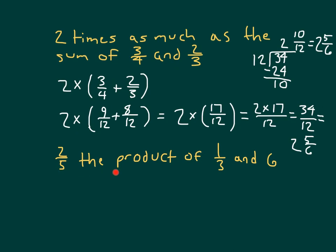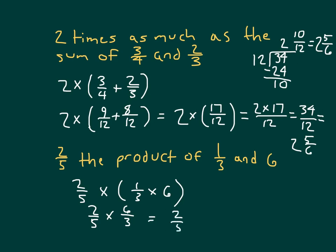Now the second expression: two-fifths the product of one-third and six. The product of one-third and six is in parentheses, and we take two-fifths of that. We evaluate what's in parentheses first: one-third times six equals six-thirds, or six over three, which evaluates to two. So we're looking at two-fifths times two, which equals four-fifths. This expression is much lower and smaller than the other expression.